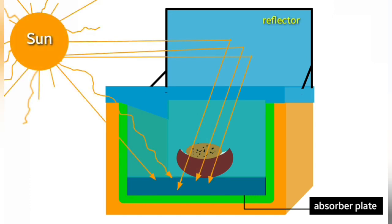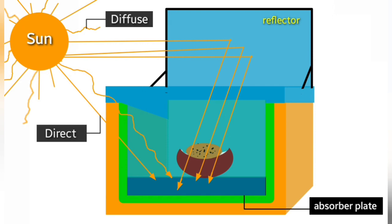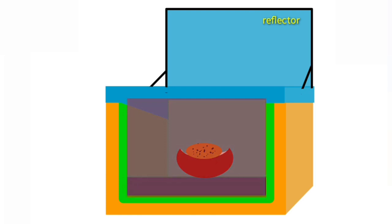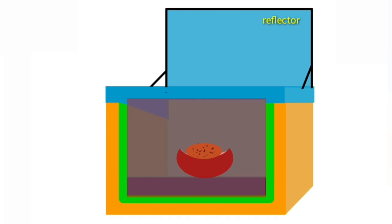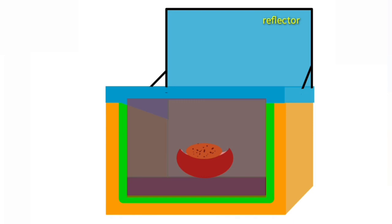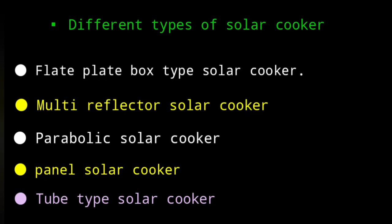Solar radiation falls on the absorber plate, which absorbs heat from a flat plate box-type solar cooker using direct and diffuse solar radiation. The absorber plate heats up, increasing the temperature of the box. In a simple flat plate box-type solar cooker, the temperature of the box is increased using insulating material, and heat is transferred to the utensil so that food is cooked.